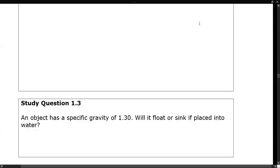Here we have an object with a specific gravity of 1.30. That means it's heavier than water. So assuming it doesn't dissolve in water, that object would sink if it were placed in the water. An object with a specific gravity less than one would float on water, meaning it's less dense than water.